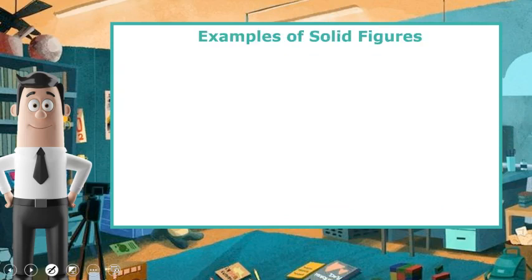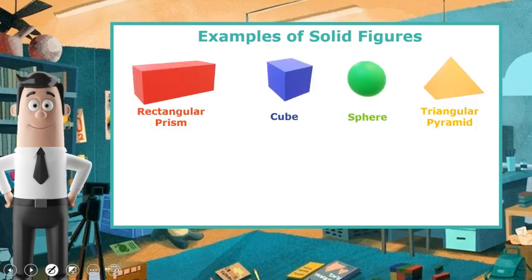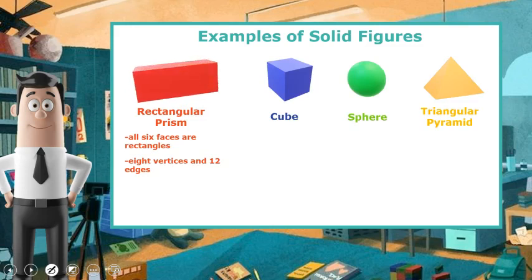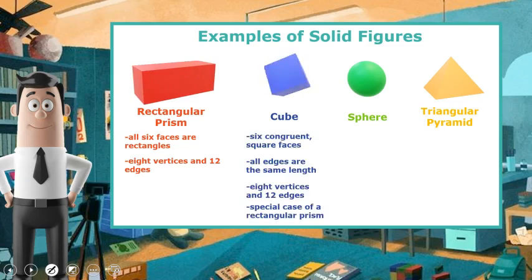Here are some examples of solid figures. Rectangular prisms. They have all six faces are rectangles and eight vertices and 12 edges. We have cubes, six congruent square faces. All edges are the same length, eight vertices and 12 edges. It's a special case of a rectangular prism.